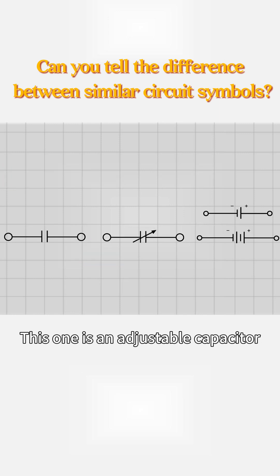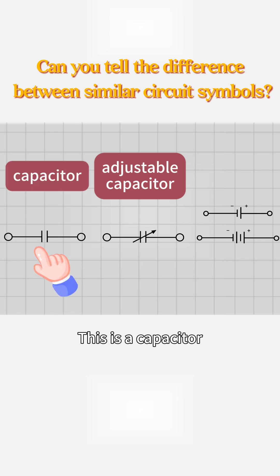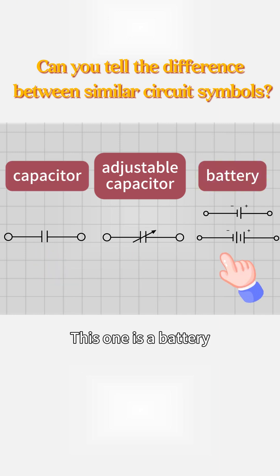Which one is an adjustable capacitor? This one is an adjustable capacitor. This is a capacitor. This one is a battery.